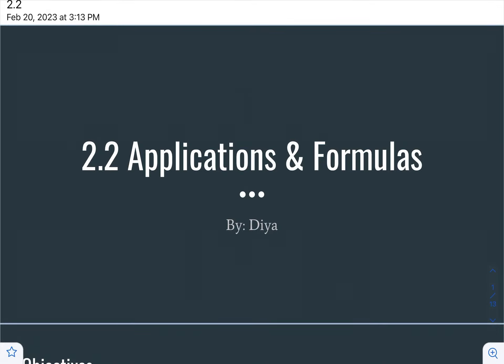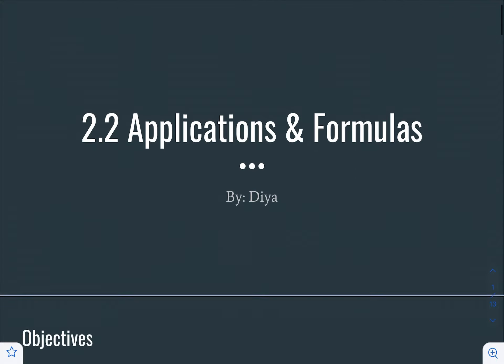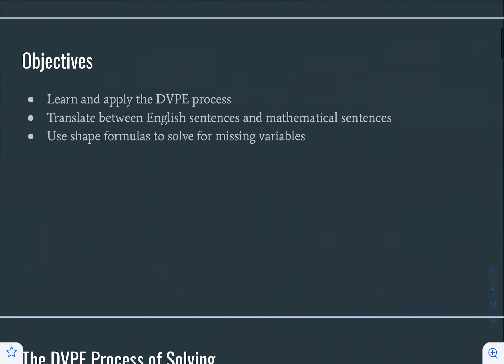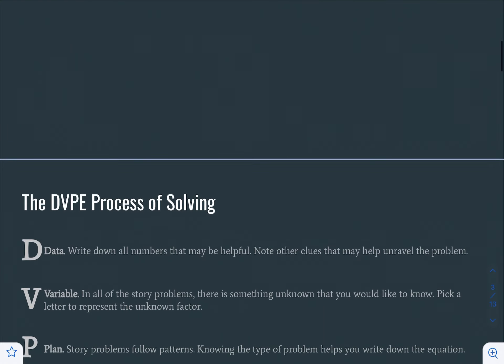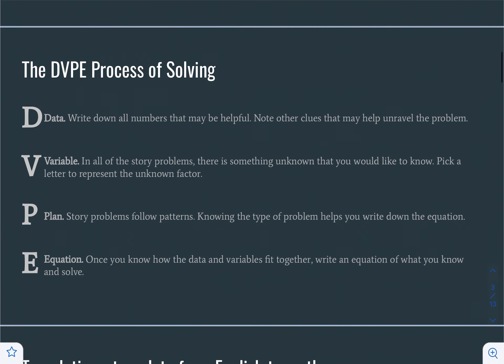Hi, today we're going to be doing Lesson 2.2, which is Applications and Formulas. The objectives of this lesson are to learn and apply the DVPE process, translate between English sentences to mathematical equations, and use shape formulas to solve for missing variables.